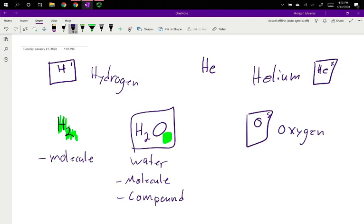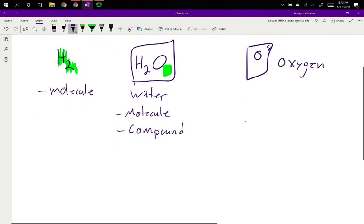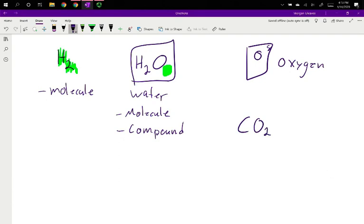There's other compounds that we see regularly in society. Carbon dioxide, CO2, is one carbon and two oxygens. Methane, fairly common natural gas if you have gas heating, is one carbon and four hydrogens.